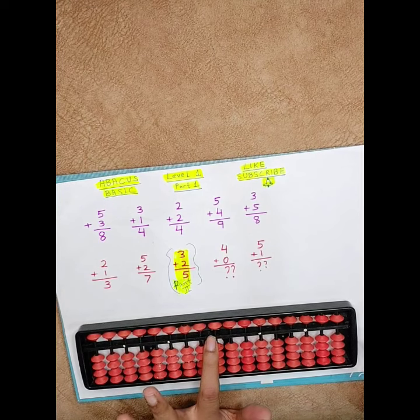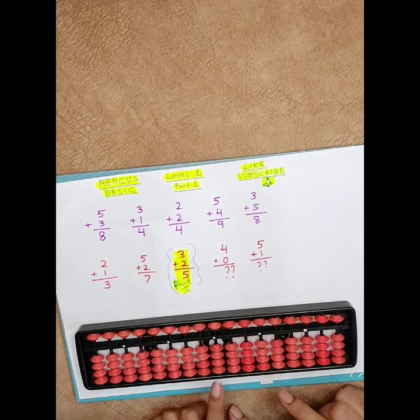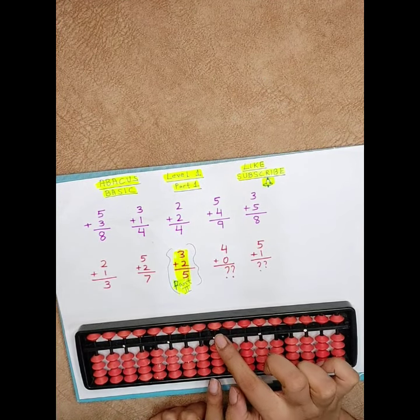See, this is the middle one. This denotes one's place. The middle one denotes one's place.